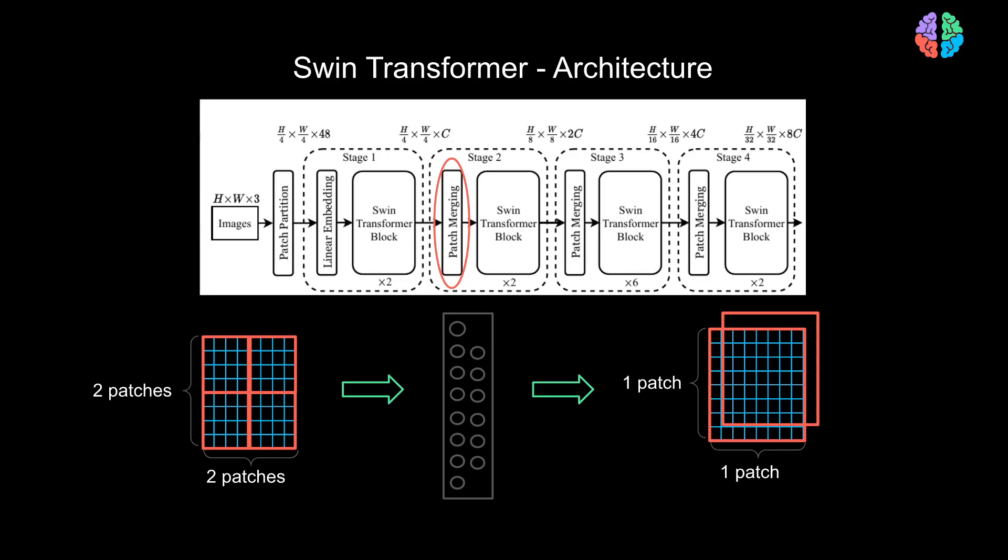As you can see from the figure, the network has 4 stages. At the end of stage 3 and stage 4, the size of each patch will be 16 by 16 and 32 by 32 respectively. So that's patch merging for you. Now we have one more main component of the network to look into and that's the Swin Transformer block.